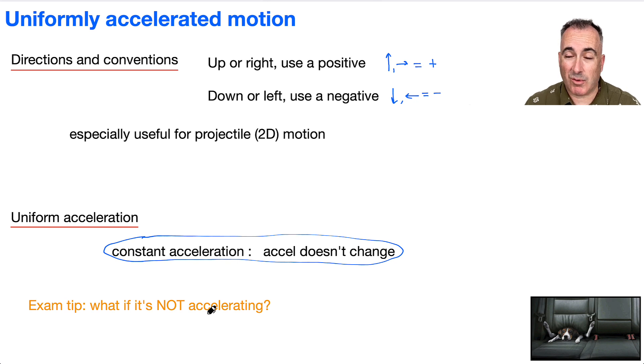So if it's not accelerating, what if it's at a constant speed? If it's at a constant speed, remember, acceleration is a change in velocity normally. If it's not accelerating, that means A is 0. And remember, A is just equal to delta V over delta T. So that means there must not be a change in velocity.